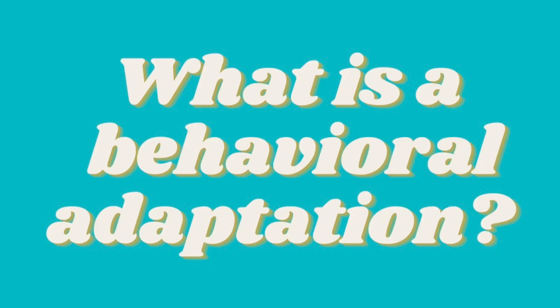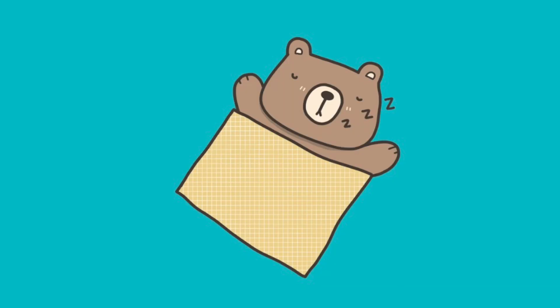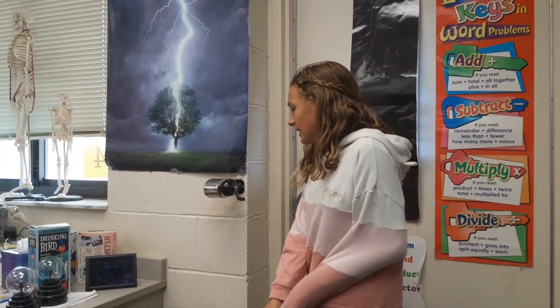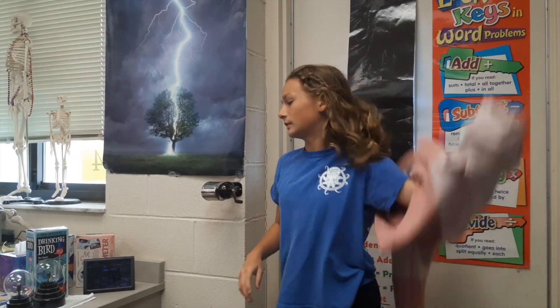So what is a behavioral adaptation then? Behavioral adaptations are actions plants and animals use to survive. For example, bears hibernate during the winter and birds migrate south. I'm going to go outside — oh, it's 86 degrees outside. Probably should take my coat off. That's an example of a behavioral adaptation.